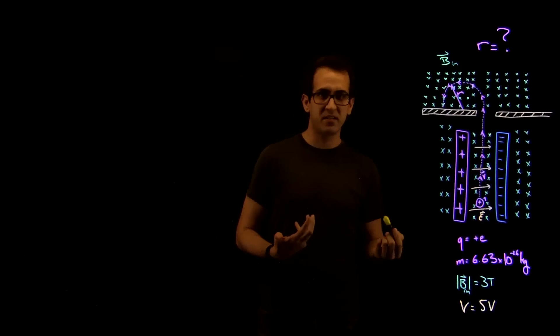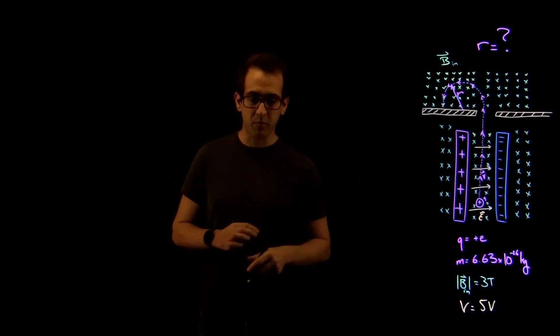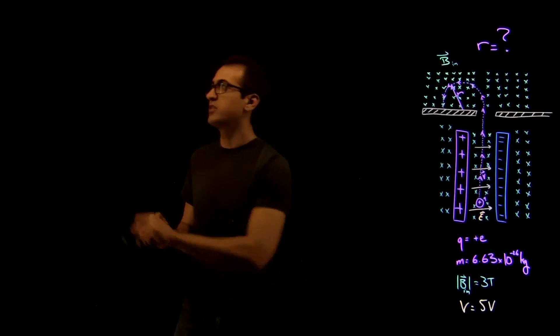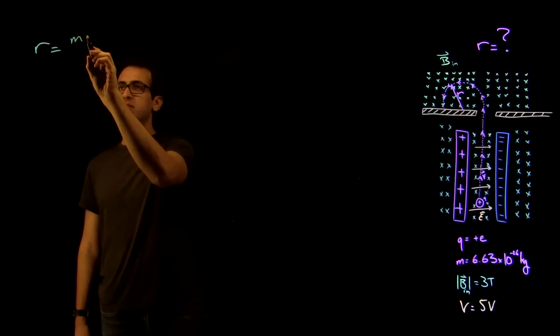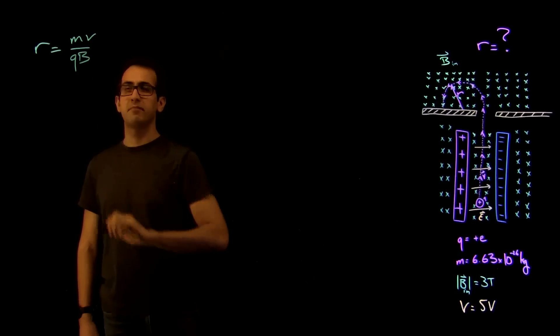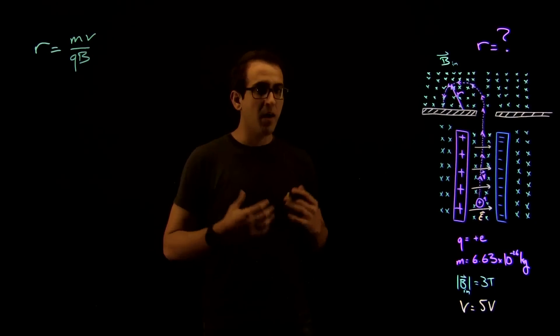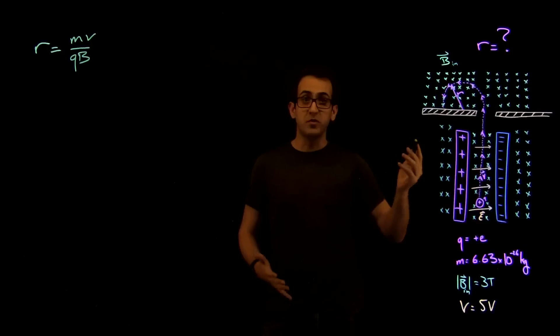Now, to find the radius of curvature here, we'd do what we're more familiar with, which is taking the expression R is equal to MV over QB. We would put in the various variables we need, and we'd find the radius. But we don't know the initial velocity, or the velocity that it goes into.